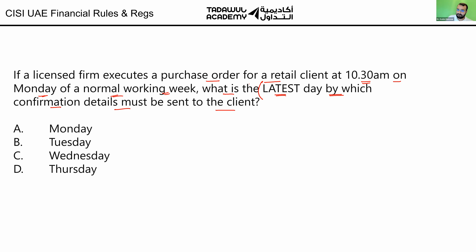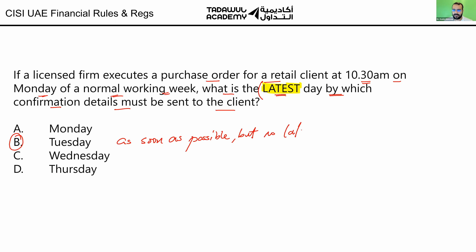We usually expect confirmation on the same day, but the question is asking about the latest day. CISI says you should inform the client as soon as possible, usually on the same day, but no later than the next business day. Monday is correct as the expectation for as soon as possible, but for the latest, you have until the next business day.